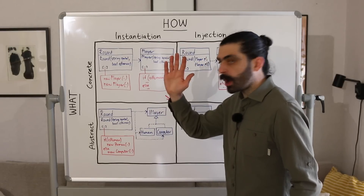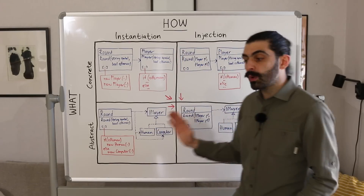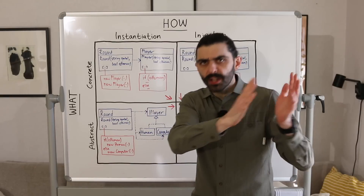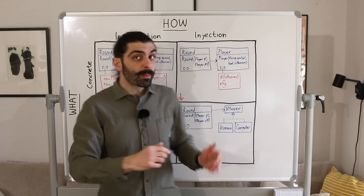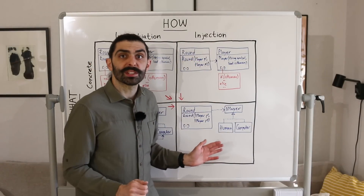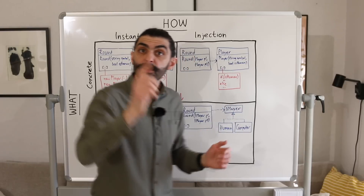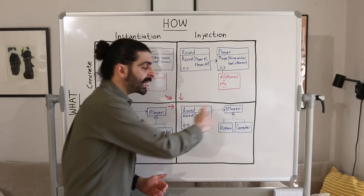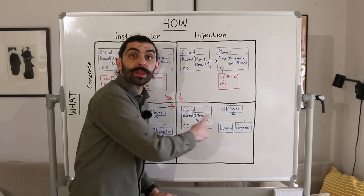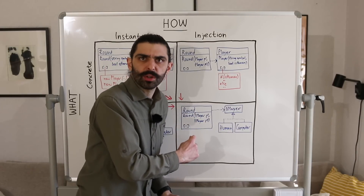Here's how it works. If you are operating in this quadrant or this quadrant, then you are following the principle: program to interfaces, not to implementations. If you are operating in this quadrant or this quadrant, then you are following the principle of dependency injection. But if you are following both principles, then you end up in this quadrant, and then you are following the principle: depend on abstractions, not on concretions.